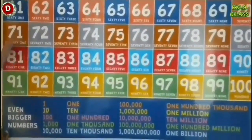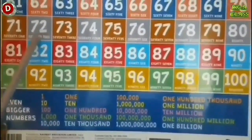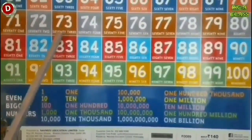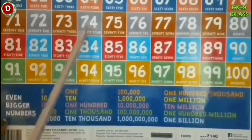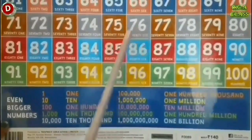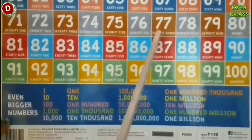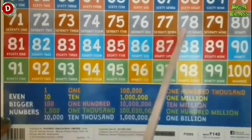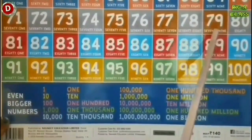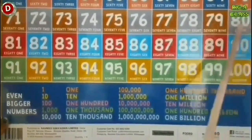After 70 comes 71. Look here — 71, then comes 72, 73, 74, 75, 76, 77, 78, 79 and after 79 comes 80.